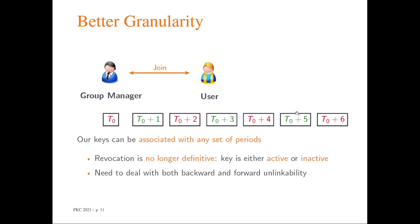This has important consequences on the security properties of the system. In particular, revocation is no longer definitive — we speak of active or inactive users and keys rather than revoked users. We now need to deal with both backward and forward unlinkabilities. The fact that we consider any set of time periods also rules out many solutions such as binary trees to represent time periods, as they would not be efficient with this high granularity.